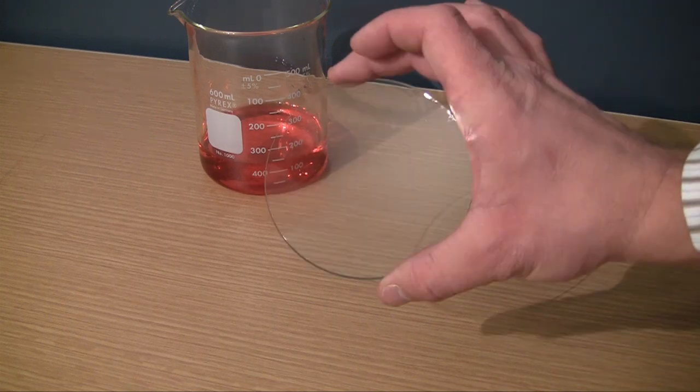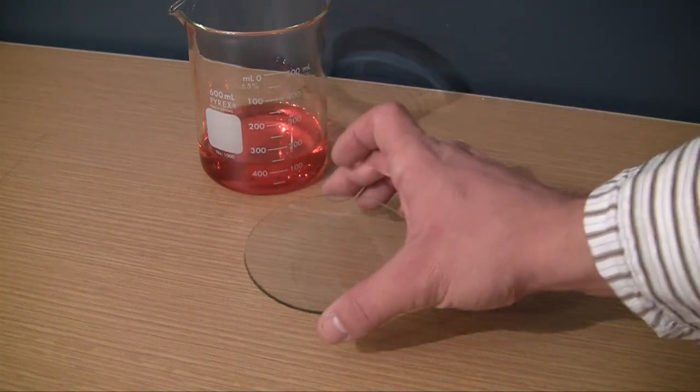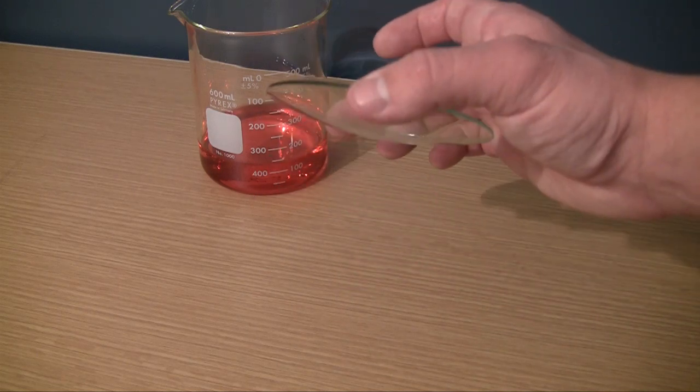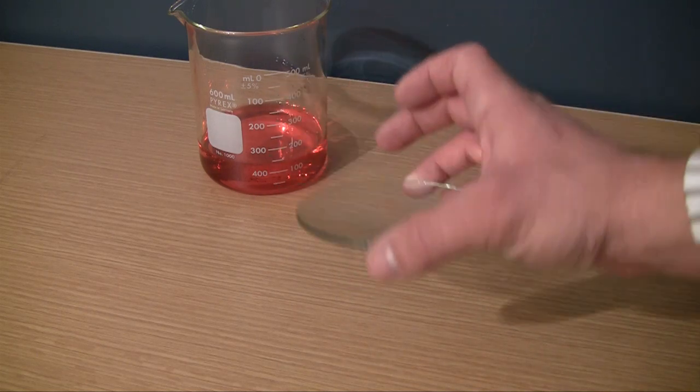Another thing I want to recommend is that if you can, buy a watch glass. A watch glass is basically a big round piece of glass. It kind of looks like a contact lens if you can see it.